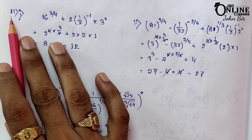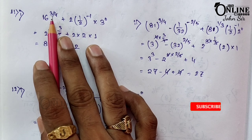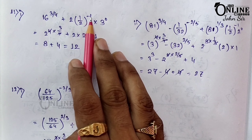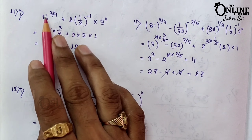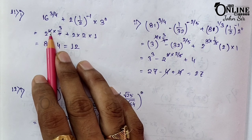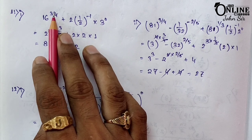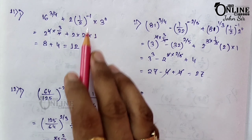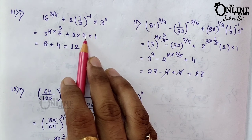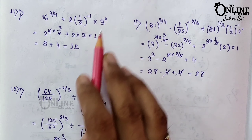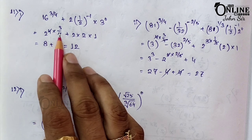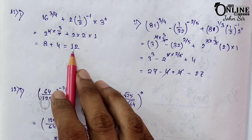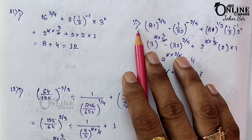Sum 11.1: 16^(3/4) + (1/2)^(−1) × 3^0. Now 16 means 2^4, so 4 multiplied by 3/4 gives 2^3. Then (1/2)^(−1) means 2^1, and 3^0 equals 1. So 4 cancels out, 2^3 becomes 8, and 2×2 is 4, so 8 + 4 = 12.